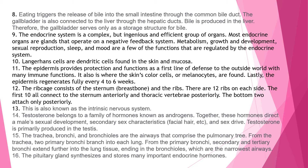Explanation 9: The endocrine system is a complex but ingenious and efficient group of organs. Most endocrine organs are glands that operate on a negative feedback system. Metabolism, growth and development, sexual reproduction, sleep, and mood are a few functions regulated by the endocrine system. Explanation 10: Langerhans cells are dendritic cells found in the skin and mucosa.